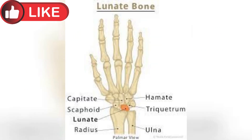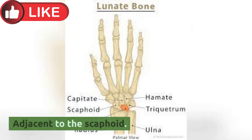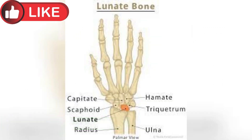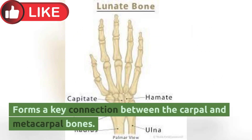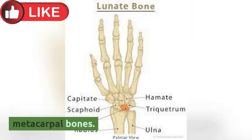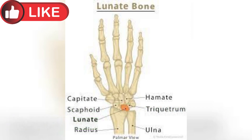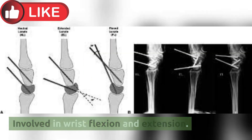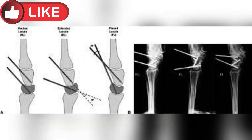Lunate: Adjacent to the scaphoid, it forms a key connection between the carpal and metacarpal bones, and is involved in wrist flexion and extension.